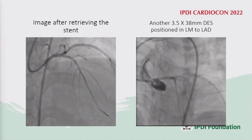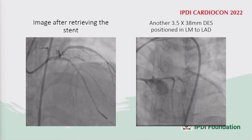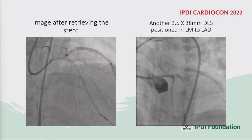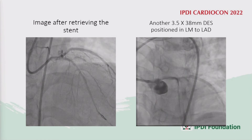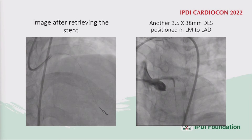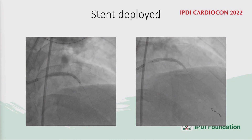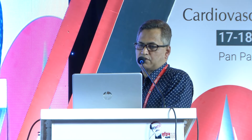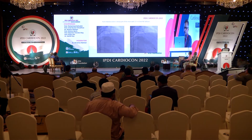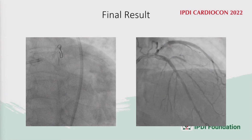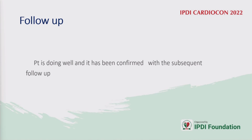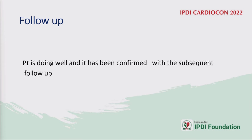The image after retrieving the stent was reviewed. The vessel was rewired with the help of the guiding catheter, and a 3.5 x 38 mm drug-eluting stent was deployed again from the left main to the LAD. The stent was deployed, post-dilation was performed, and this is the final result. The patient is doing well, confirmed by subsequent follow-up.